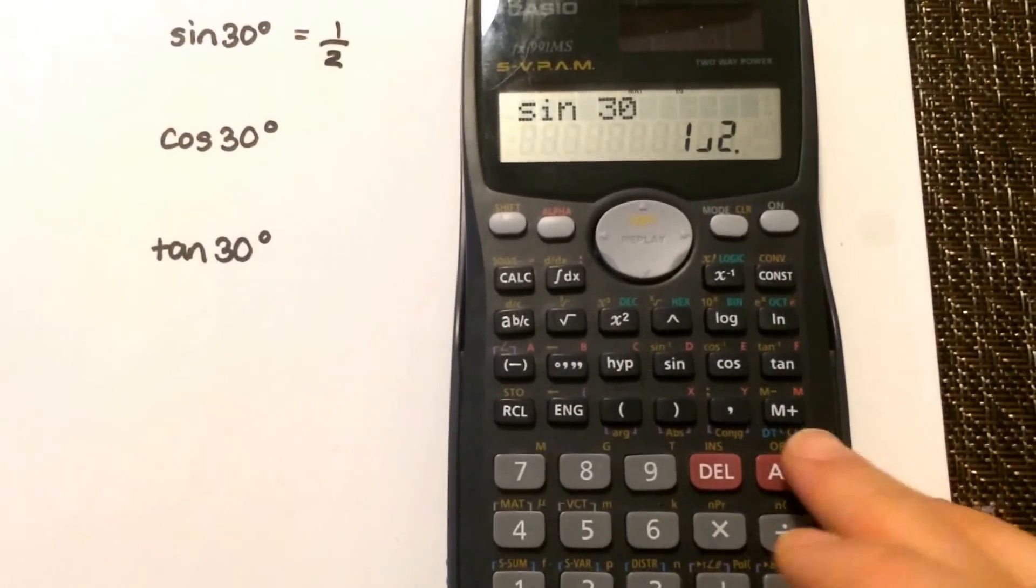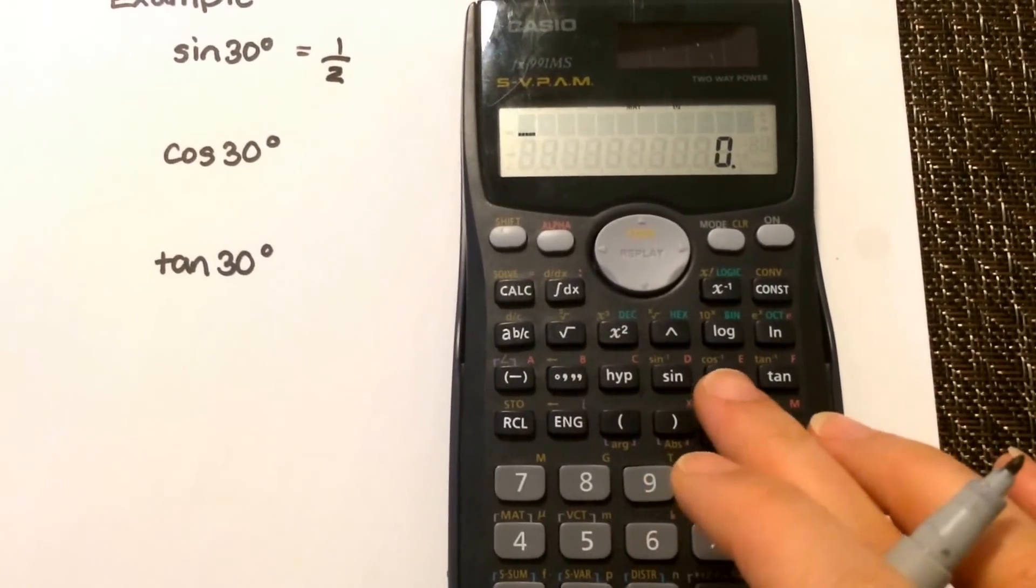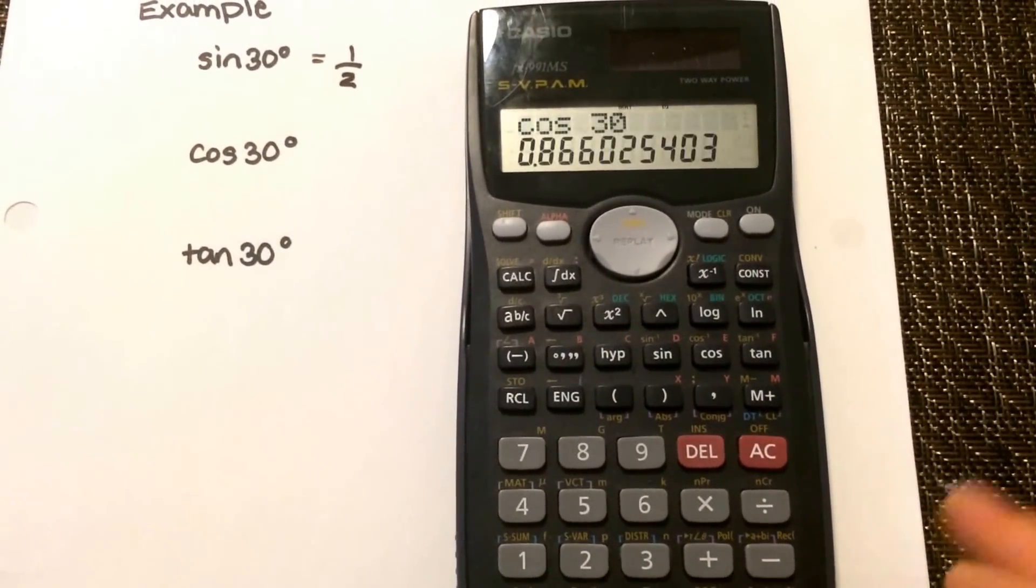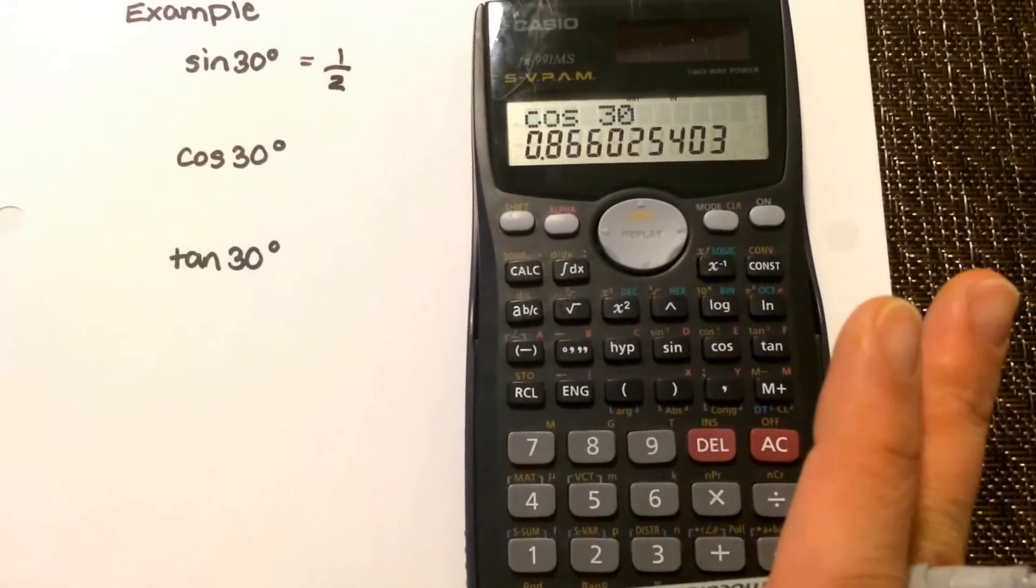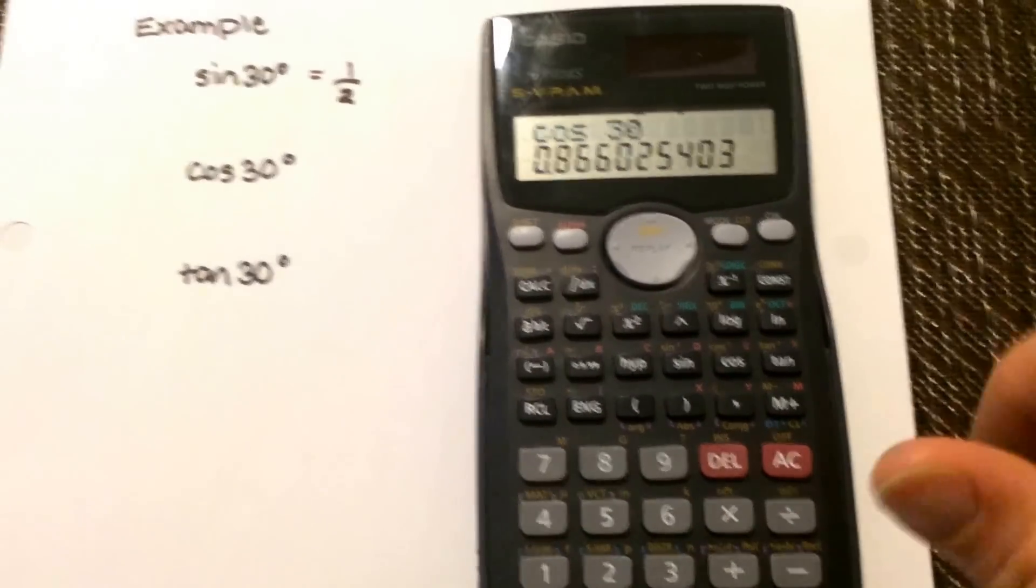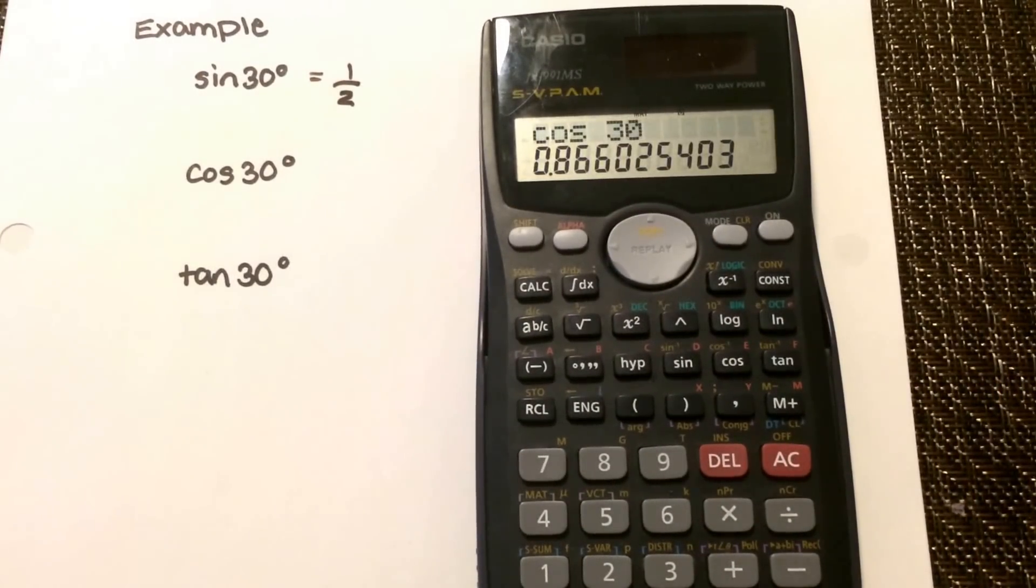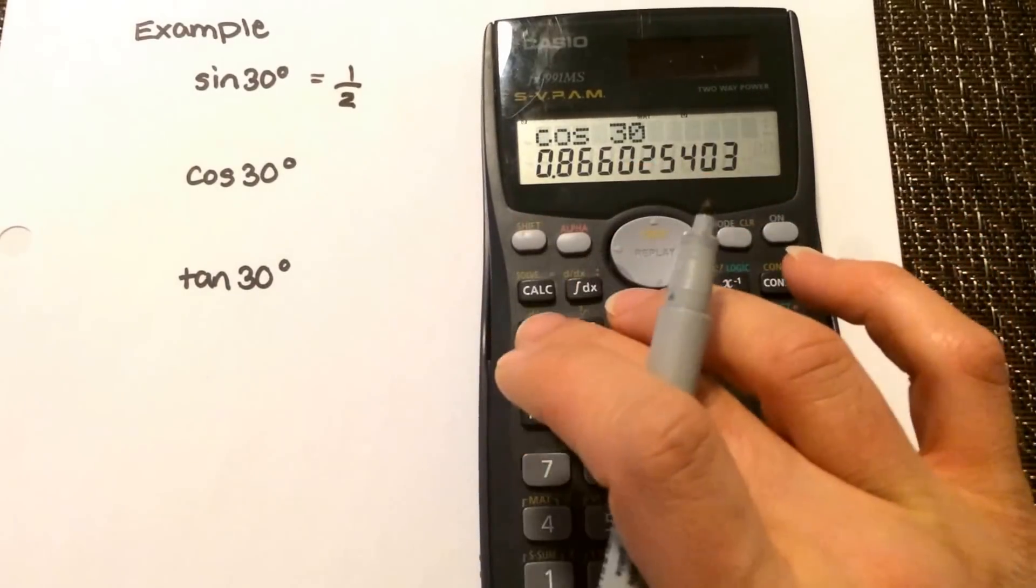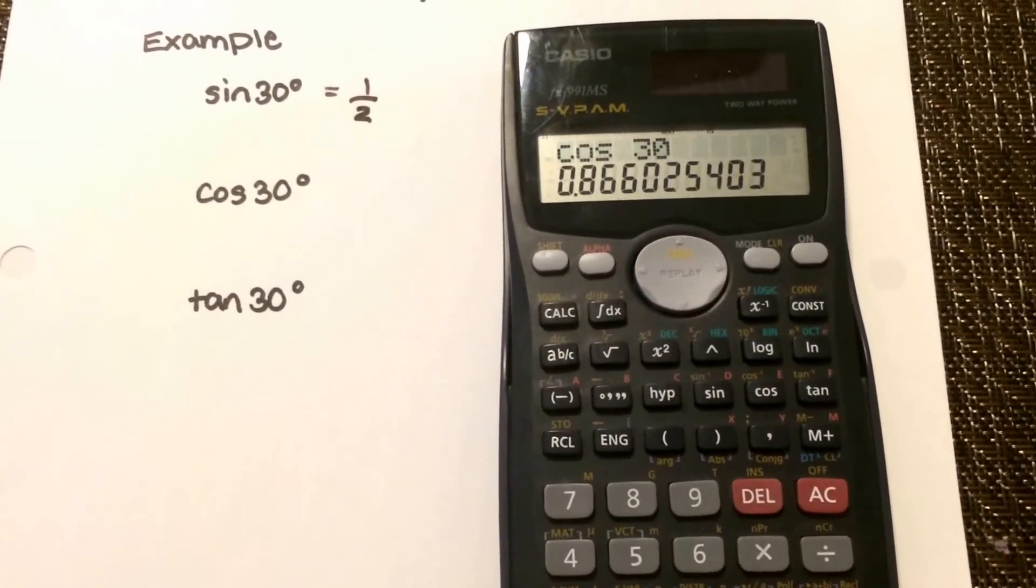Okay, so for cos of 30, select cos 30 and it's a decimal. This one I most likely won't switch it into a fraction. You can try. No.